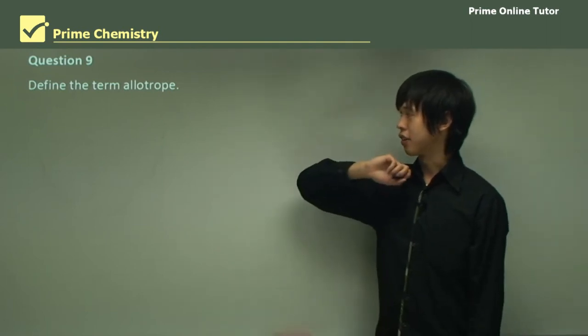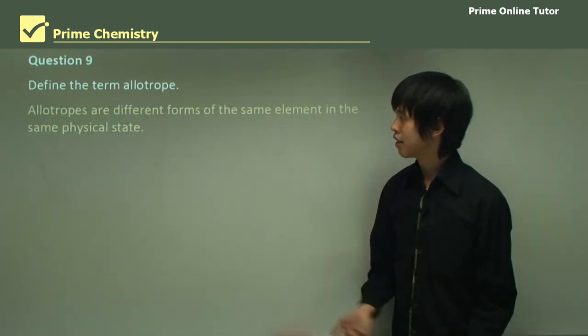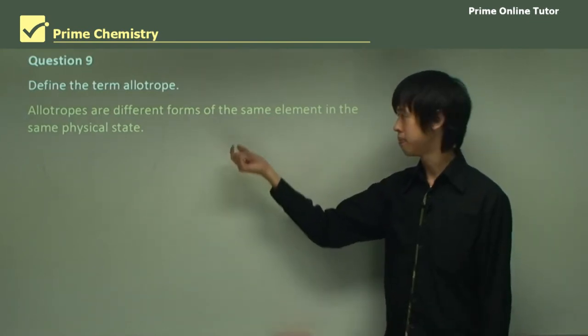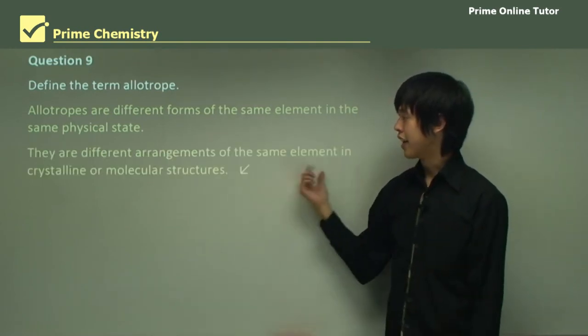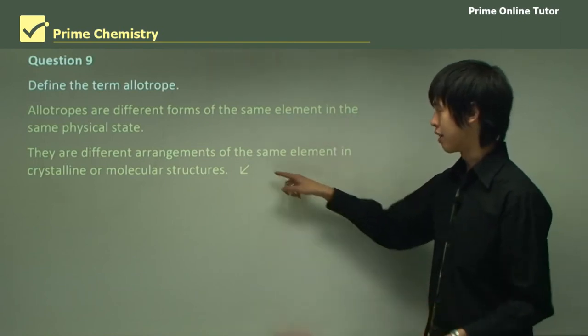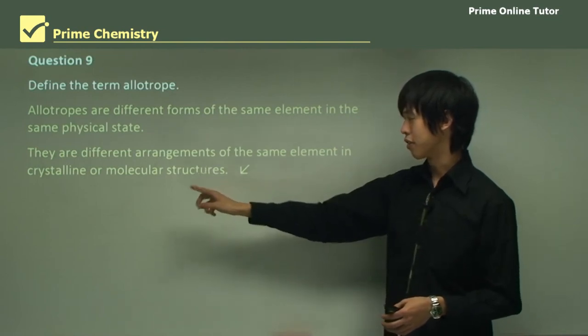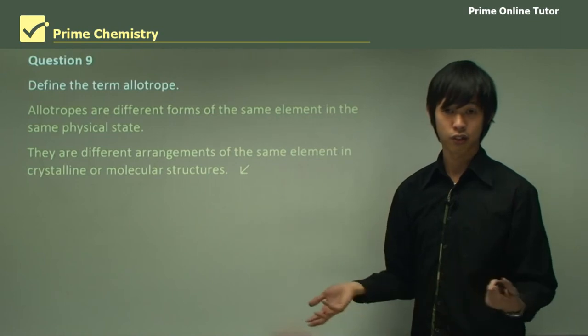Now define the term allotrope. All we have to do is just tell us what allotrope means. Allotropes are different forms of the same element in the same physical state. So remember, just different forms of the same element. And they're arranged differently, the atoms that is, they're arranged differently. They're formed in crystals or different molecular structures. And that's what makes allotropes different to one another.